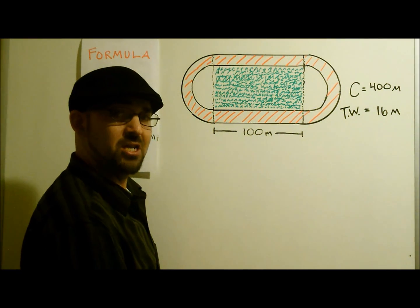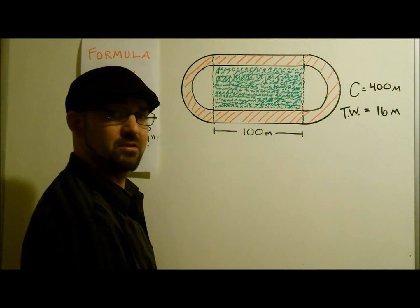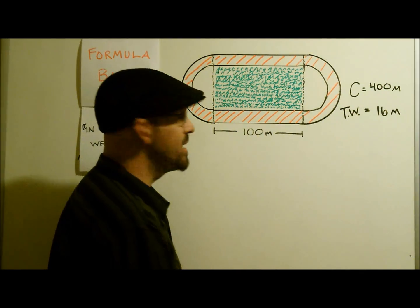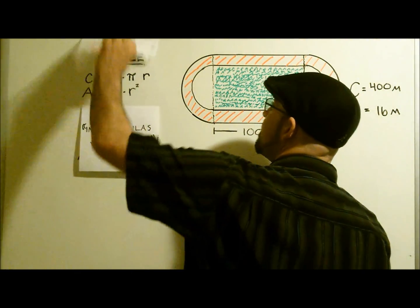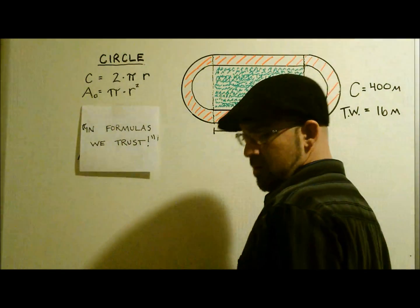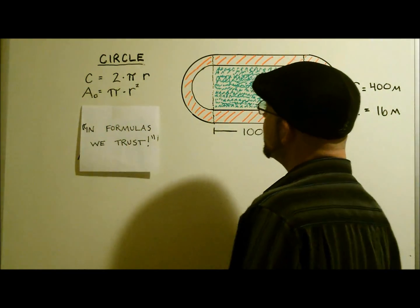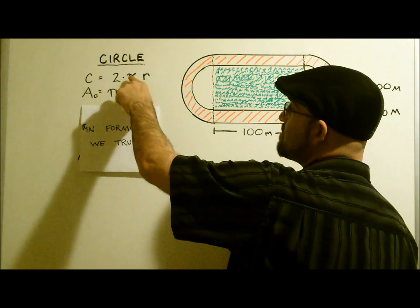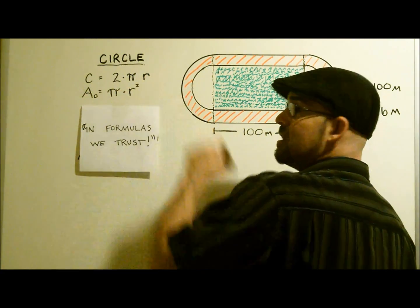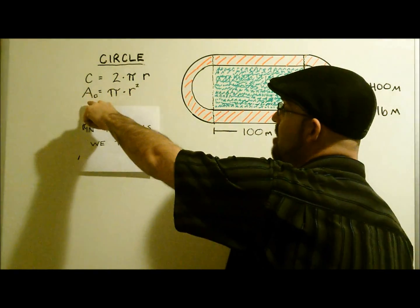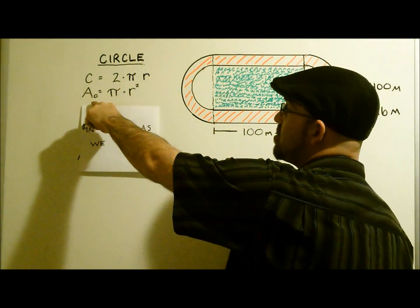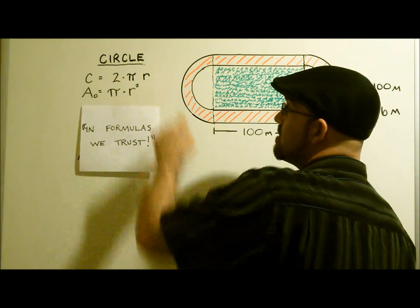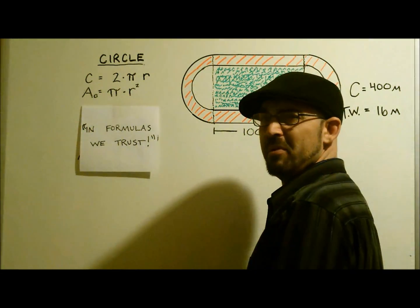I know some formulas about those. Let's take a look at our formula bank. For the circle, we know that the circumference is 2 times pi times r, and we also know that the area of a circle is pi times r squared. Maybe we can use those.